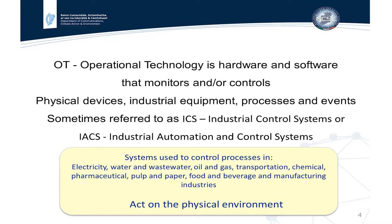They are systems used to control processes in a wide range of industries: electricity, water and wastewater processing, oil and gas, transportation, airports, railways, traffic lights, chemical and pharmaceutical, paper and pulp, food and beverage, and manufacturing. They act on the physical environment — taking data from sensors and controlling that physical environment.